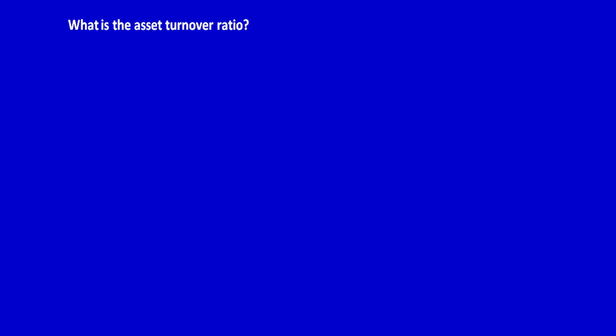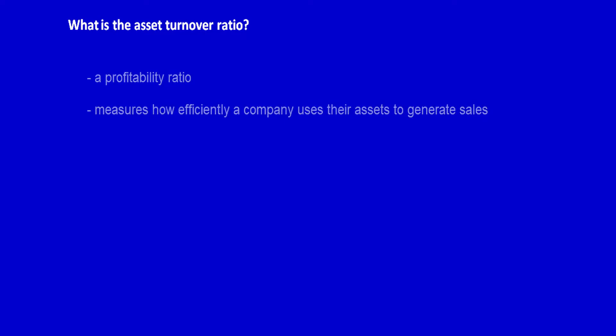What is the Asset Turnover Ratio? The Asset Turnover Ratio is a profitability ratio. It measures how efficiently a company is using its assets to generate revenue or sales.